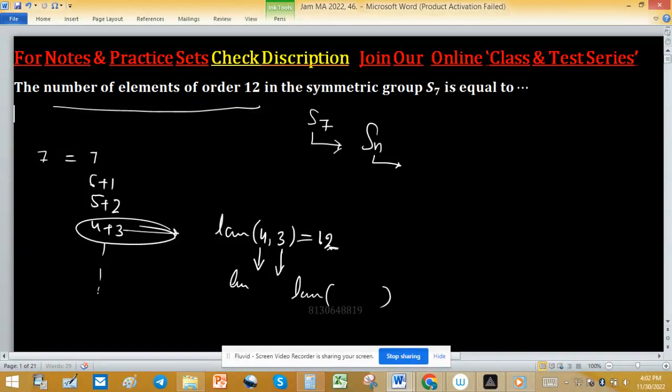So 4 is repeating once, so factorial 7 upon 4 to the power 1 factorial 1, and 3 is again only single time. So solve this expression, you will get 420. So 420 elements of order 12 will exist in S_7.